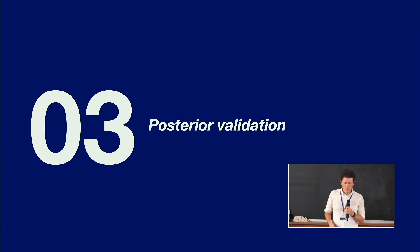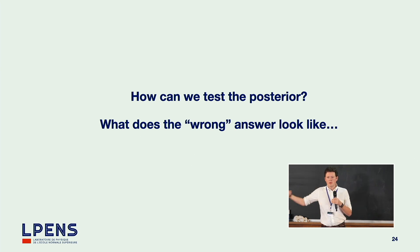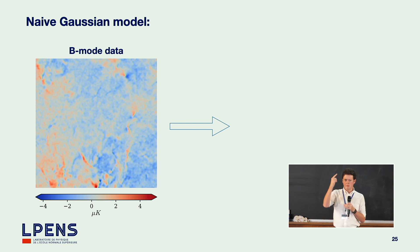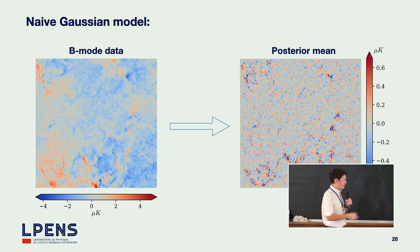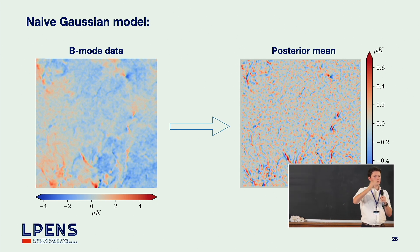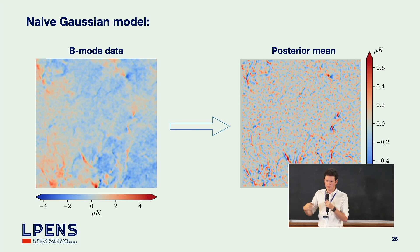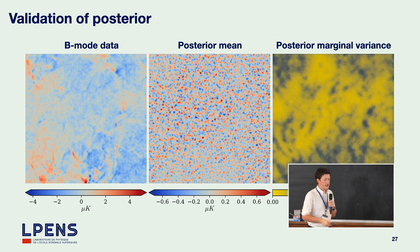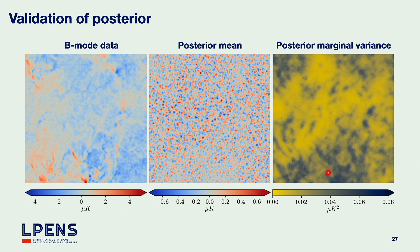Now, posterior validation. I showed you the mean and variance for this data — how can I test the posterior? Me just saying it's Bayesian doesn't make me right; I need to actually show I'm getting what I expect. What does a wrong answer look like? If I take my mock data and assume a statistical model where my foreground is Gaussian, I can solve this analytically and get my posterior mean — but this is very bad, because you have excess power exactly where there's a lot of foreground, which is the opposite of what you want. If you have a lot of foreground, your posterior mean should be pushed towards zero by the prior. That's exactly what happens with our moment networks: where there's a lot of foreground, the posterior mean gets pushed towards zero and the posterior marginal variance gets high.